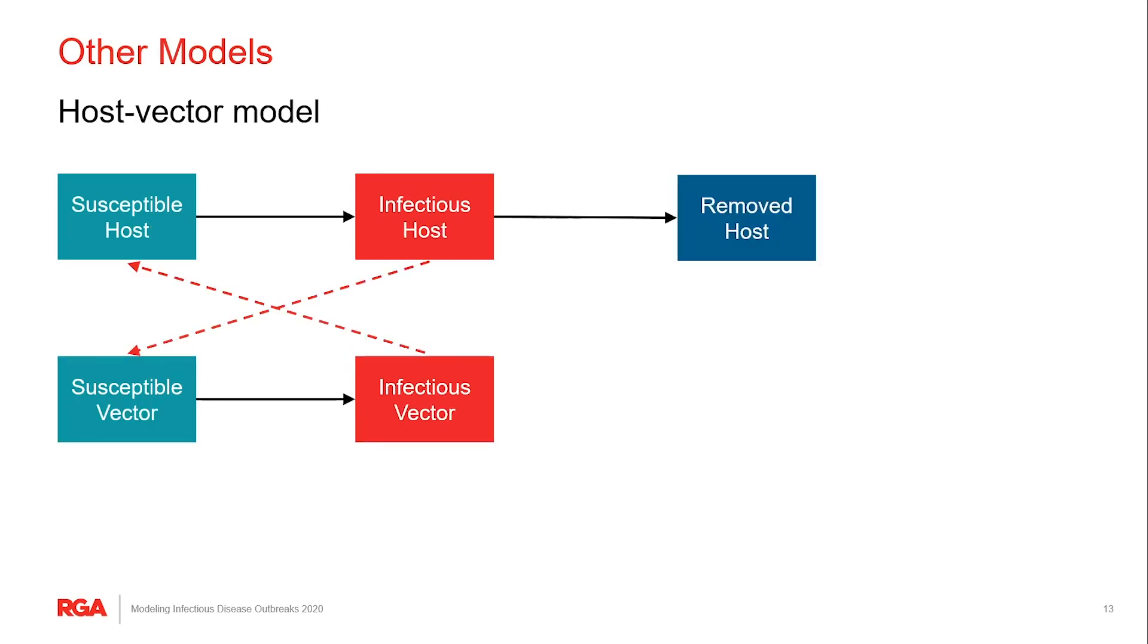And then there's a whole family of vector-borne disease models. Malaria is such a disease where a pathogen gets passed among hosts of completely different species. And here a person has to come in contact with an infected vector in order to get the disease. And then likewise, the vector has to come in contact with an infectious host or an infectious person in order to become infectious themselves. So you get this disease passing between one species to another.